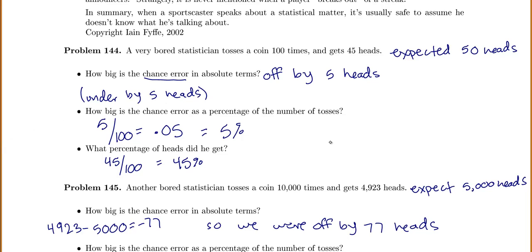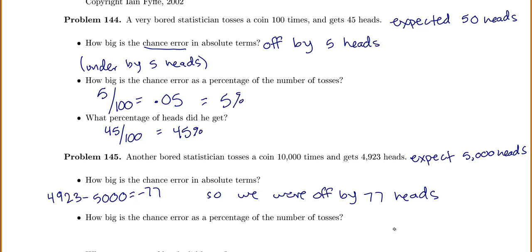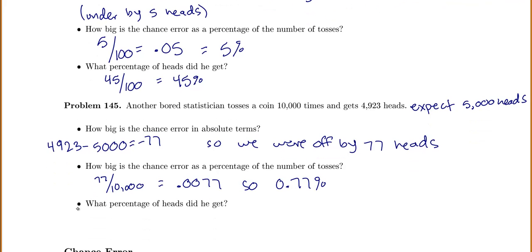Notice the difference between these two problems: in the first one we were off by 5 heads, now we're off by 77 heads. But how big was that chance error as a percentage of the number of tosses? Our chance error was 77 but he tossed it 10,000 times, so as a decimal that's 0.0077, which is 0.77%. Even though the chance error went up in absolute terms, the chance error as a percentage went down. And what percentage of heads did he get? 4,923 over 10,000 is 0.4923, so 49.23% heads.